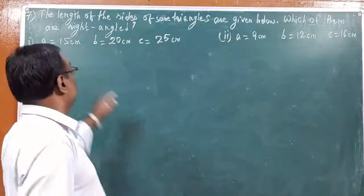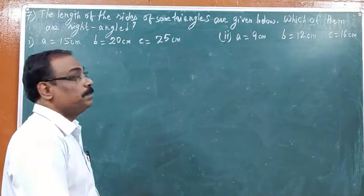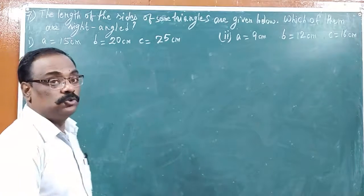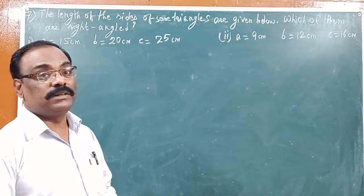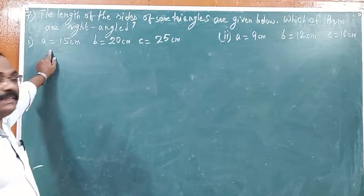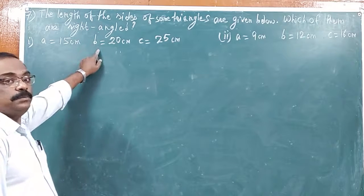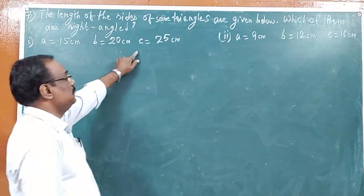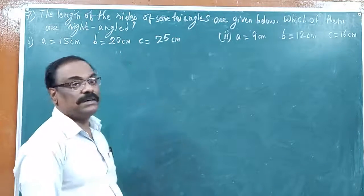You can see the length of the sides of some triangles are given below. Which of them are right angle? For the first triangle, I have taken side A equal to 15 cm, the second side B equal to 20 cm, and the third side C equal to 25 cm.